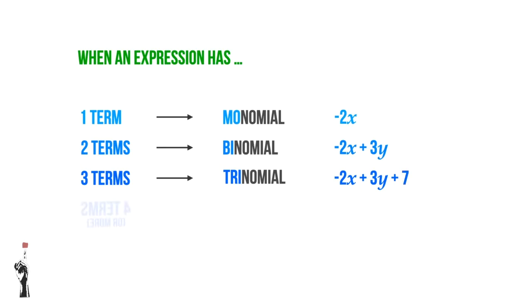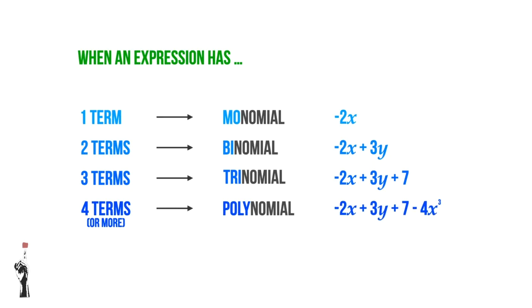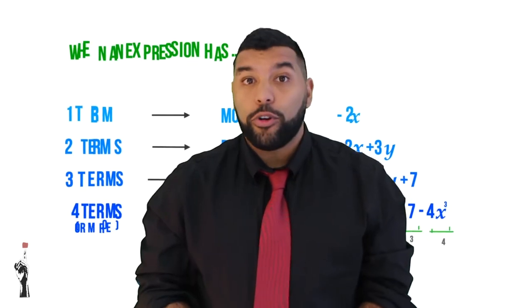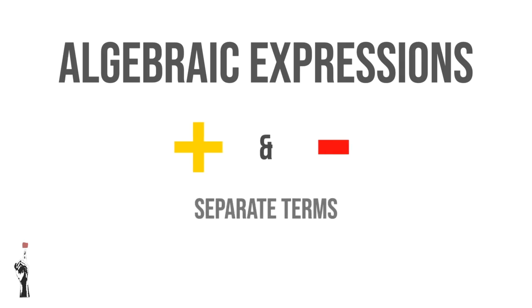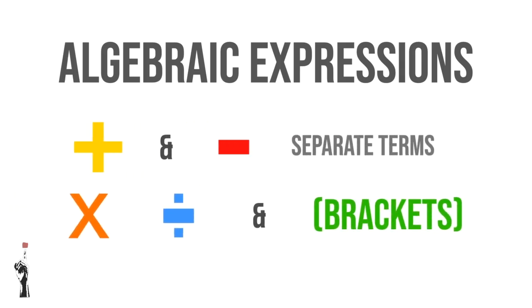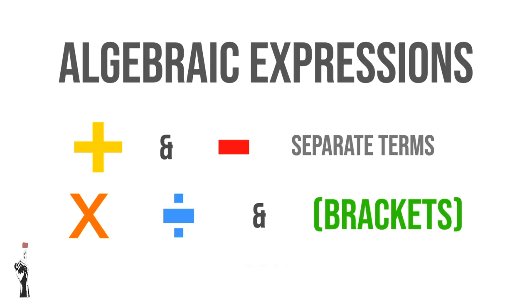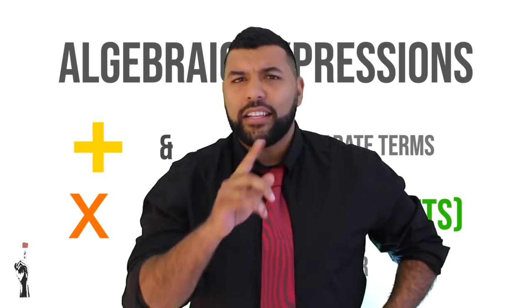If an expression has four or more terms, we say that it is a polynomial — 'poly' meaning many. So negative 2X plus 3Y plus 7 minus 4X cubed has four terms, and is considered a polynomial. A very important rule: pluses and minuses separate terms, whereas multiplications, divisions, and brackets group terms together.